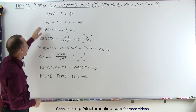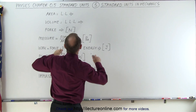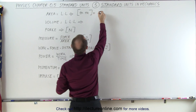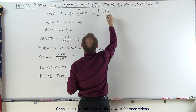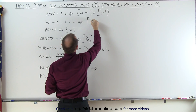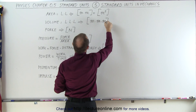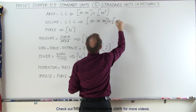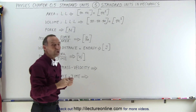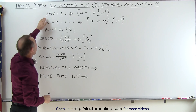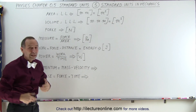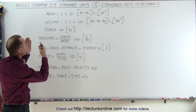For area, we have length times length, therefore the units become meters times meters, which equals meters squared. For volume, that's length times length times length — meters times meters times meters — which equals meters cubed. I use brackets to indicate units, so the units of area are meters squared and the units of volume are meters cubed.